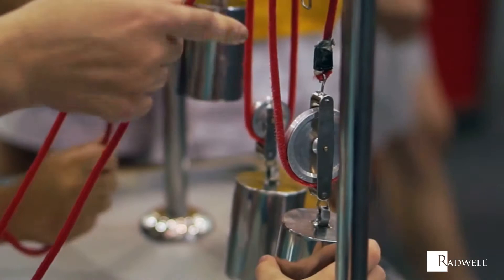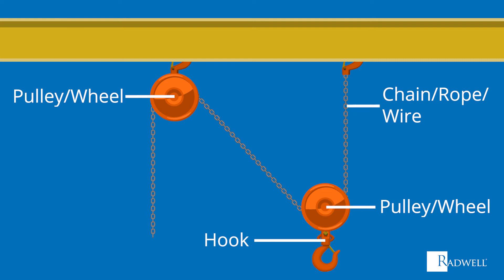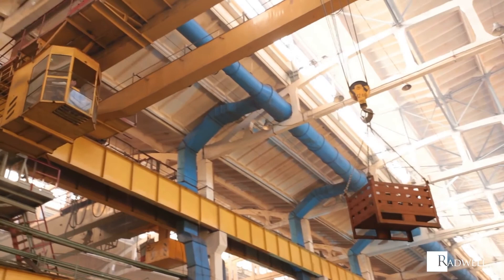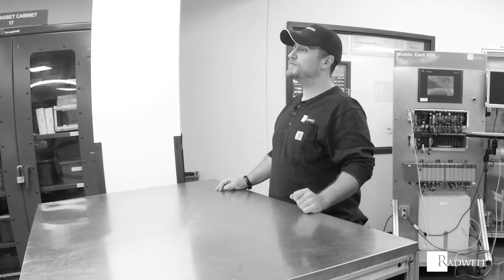A compound pulley is the most complex of the three. It is a combination of a fixed and movable pulley, which allows for the ability to change the direction and multiply the pulling force all at the same time. Being a system of pulleys, a compound pulley is typically made up of two wheels, a chain, a rope, or a wire and a hook attached to it. One end of the rope is fixed to an immovable object. On the opposite end, a wheel will be fixed to the same object as a fixed pulley would be. Then the second wheel will be fixed to the load as a movable pulley would be. With the rope looped around both wheels, a downward pull allows for the object to be lifted.